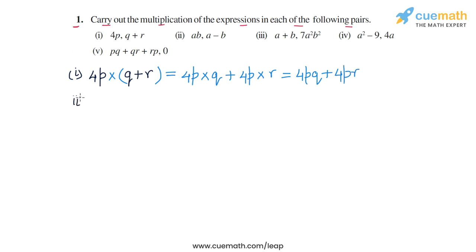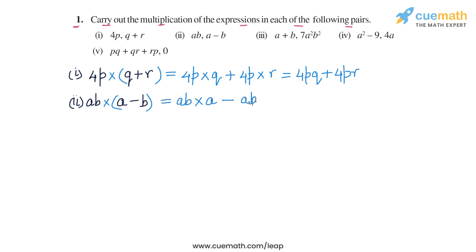In the second part, we have to multiply the expressions ab and (a − b). Once again, the first expression is a monomial and the second is a binomial, so we apply the distributive law and multiply term by term. We get ab into a minus ab into b. So ab into a will be a²b and ab into b will be ab², giving us a²b − ab² as the product in part 2.